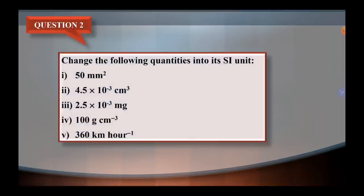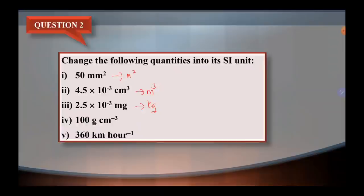Next question. Question 2 is about: change the following quantities into SI unit. Kita nak convert 50mm squared kepada meter squared, 4.5 times 10 power of negative 3 cm³ kepada meter cube, 2.5 times 10 power of negative 3 mg kepada kilogram, 100 gram per centimeter cube kepada kilogram per meter cube, dan convert 360 kilometer per hour kepada meter per second.